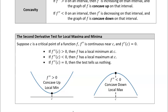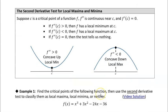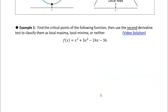If we plug the critical point into the second derivative and find that it's negative, that means the function is concave down at the critical point, which means we have a local maximum. So we're just going to use the second derivative and look at the concavity at the critical point. Let's take a look at this first example and see how it works.